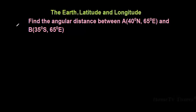Now let us take a look at this example. Find the angular distance between the position A at 40 degrees north, 65 degrees east and the position B at 35 degrees south, 65 degrees east.